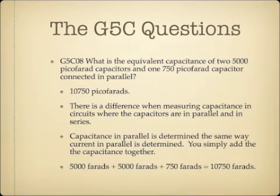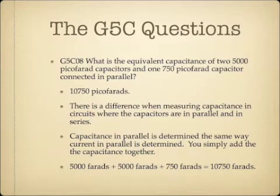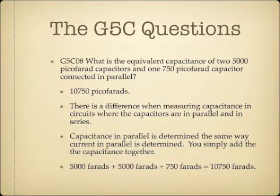What is the equivalent capacitance of two 5,000 picofarad capacitors and one 750 picofarad capacitor connected in parallel? The answer is 10,750 picofarads. Just like resistance, there's a difference when measuring capacitance in parallel versus series. For capacitors in parallel, you simply add the values: 5,000 plus 5,000 plus 750 equals 10,750 picofarads. This is exactly opposite from resistance — capacitors in parallel add directly.